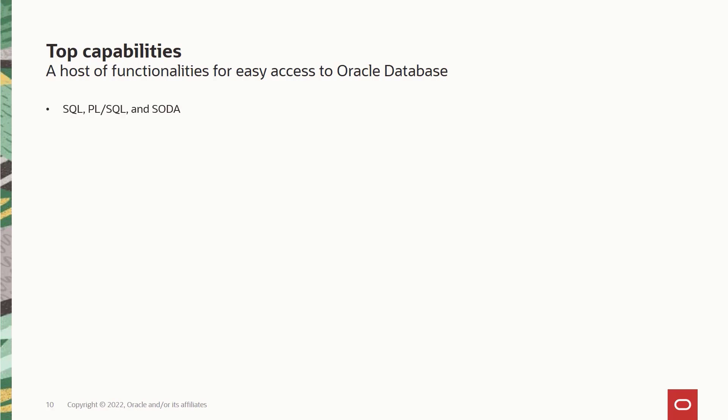We also have SODA, or Simple Oracle Document Access support, which is especially useful but not restricted for working with JSON data. In SODA you will work with NoSQL style APIs, which are used to access and work with data in document format instead of table format. There is extensive Oracle data type support in Python Oracle DB including large object support such as CLOBs and BLOBs, JSON collections, and named objects. You can do direct binding to SQL objects, and one great use case is to bind Python objects to Oracle spatial data objects.